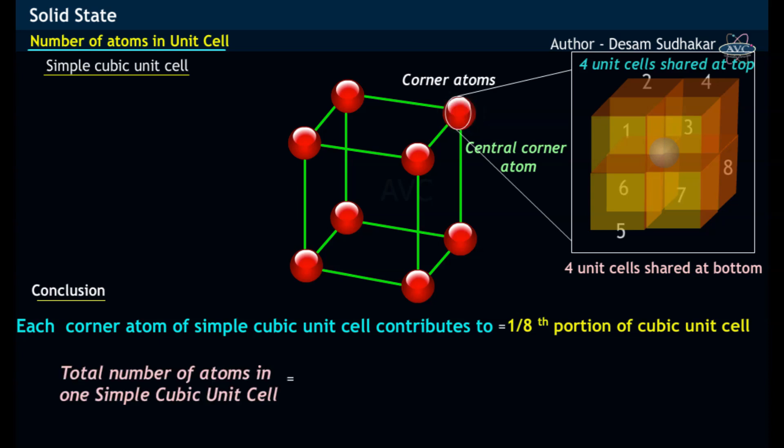The total number of atoms in one simple cubic unit cell can be calculated from the product of the total number of atoms and the contribution of each atom to the unit cell.